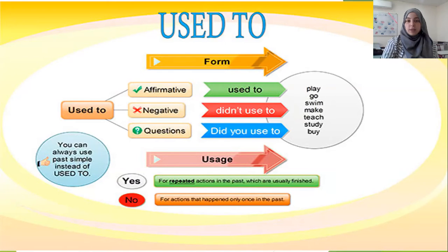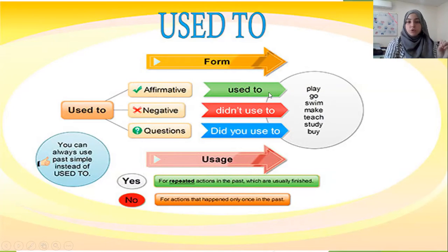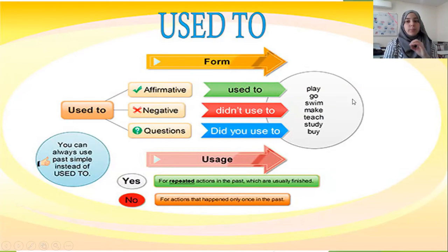Let's look at the form before looking at some examples. Used to comes in the form of used to plus an infinitive verb. So: used to play — not used to plays — used to play, used to go, used to swim.